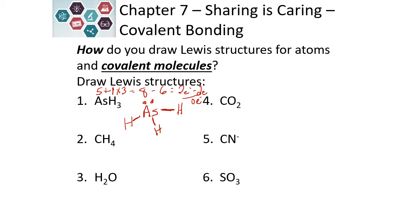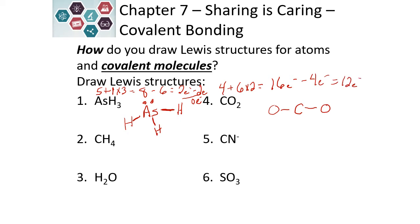Now let's do carbon dioxide. Carbon is in the 4th column, so it has 4 valence electrons. Oxygen has 6, and there are 2 of them, giving us 16 electrons to work with. Carbon goes in the center with the oxygens on the outside. We draw a single bond from each oxygen to the carbon, which uses 4 electrons, leaving 12 electrons.